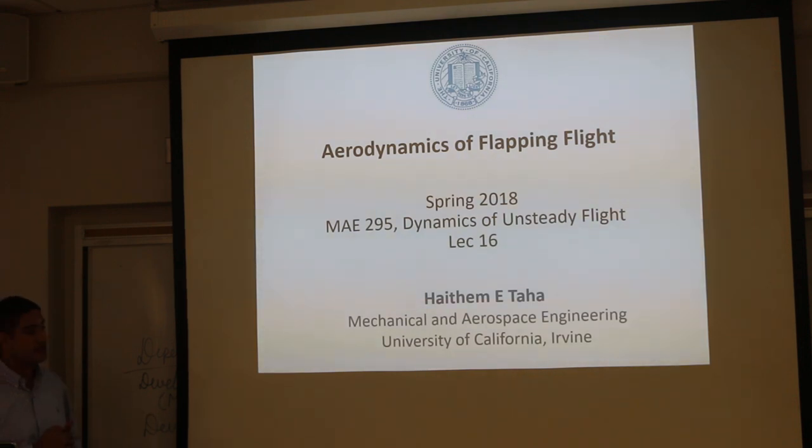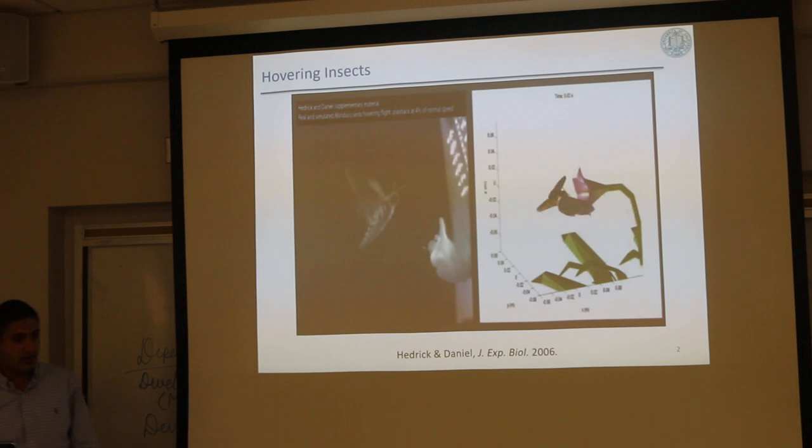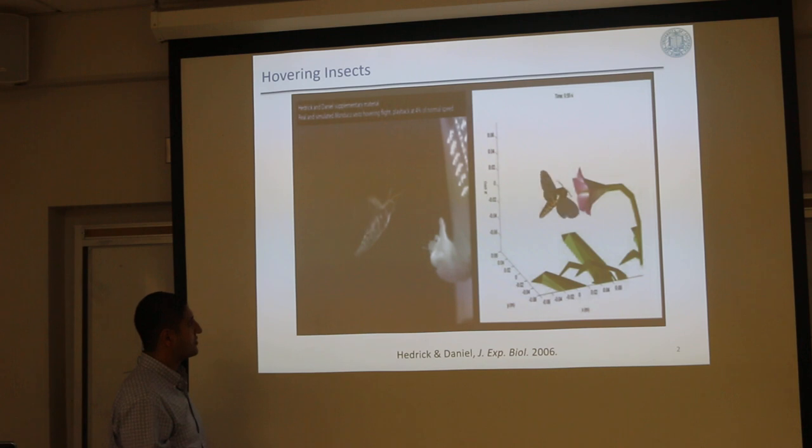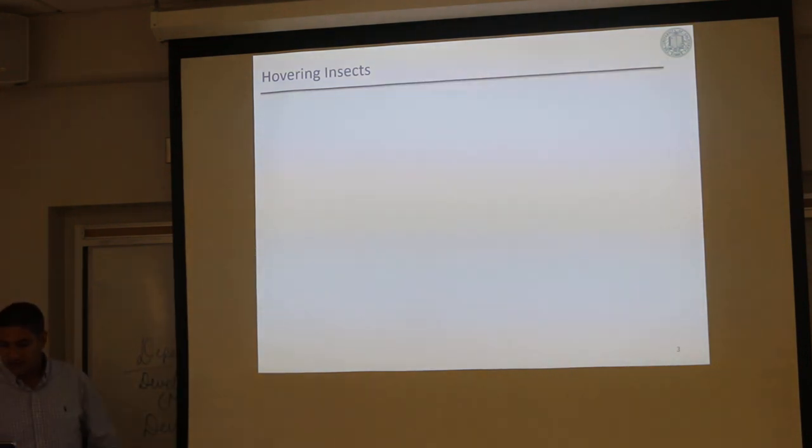We have two advanced lectures. This is one on the aerodynamics of flapping flight. Just to give you an idea, this is what I mean by flapping flight. So this is the hawkmoth insect at the hovering position. It moves its wings back and forth. This is a slow motion video. This guy moves at 26 hertz, so 26 flaps per second, much faster. In contrast to birds, birds are much slower, it's like one hertz or so.